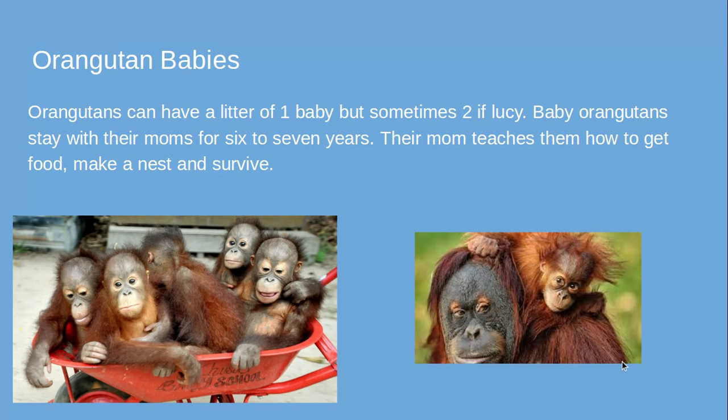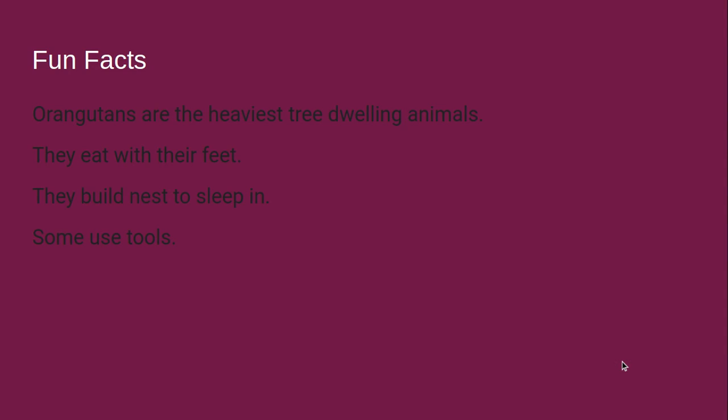Orangutan babies: orangutans can have a litter of one baby, but sometimes two if lucky. Baby orangutans stay with their mothers for six to seven years. Their mom teaches them how to get food, make a nest, and survive.